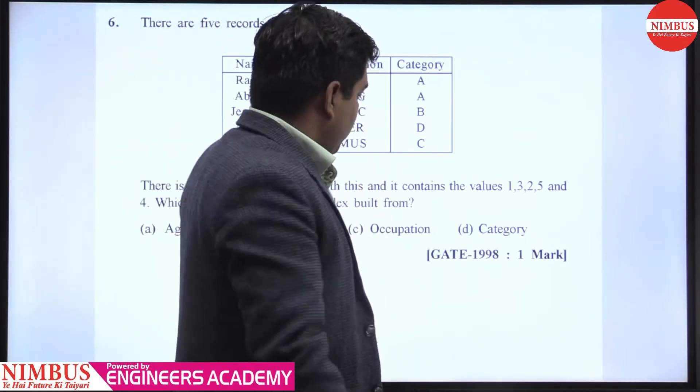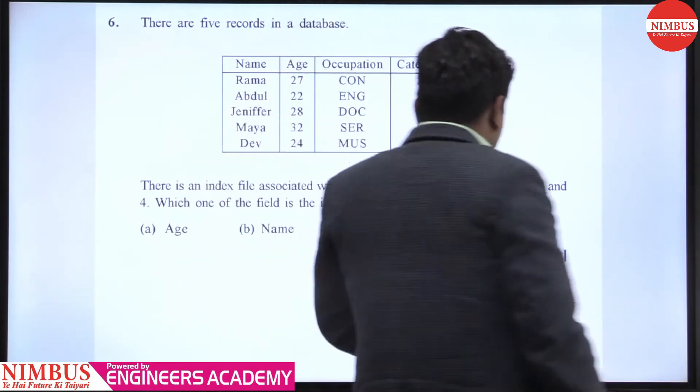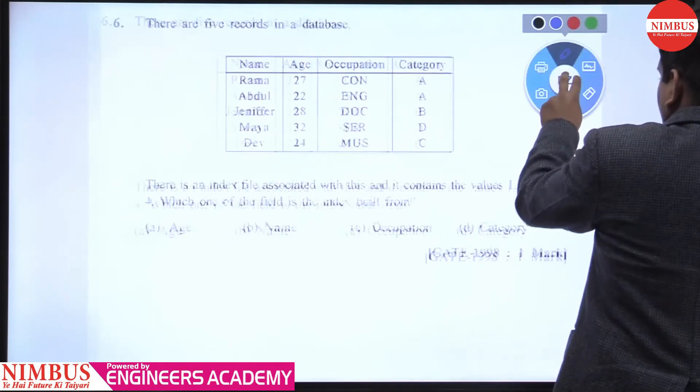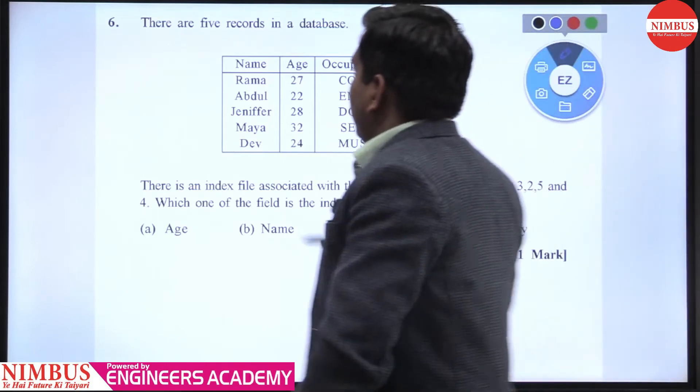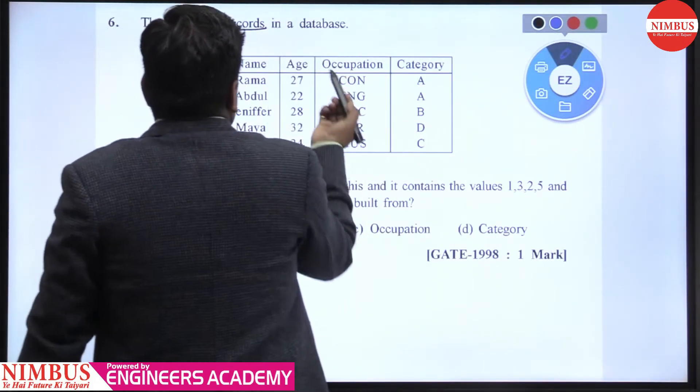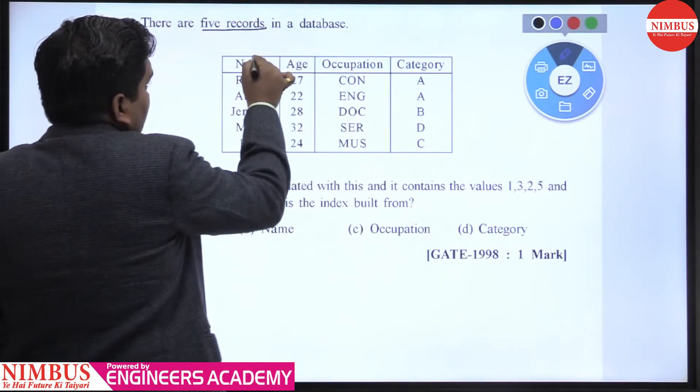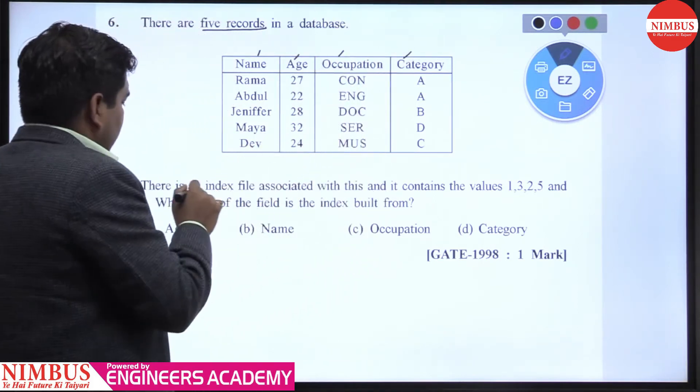Hello students, now we discuss this question. This question comes in the GATE 1998 one mark exam and is asking about: there are five records given in a database with four attributes - name, age, occupation, and category.